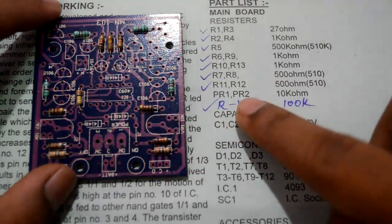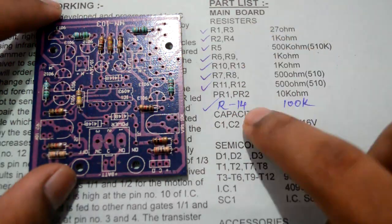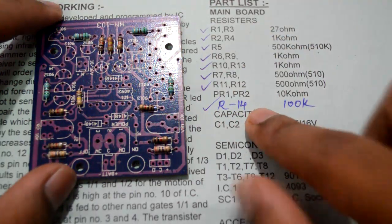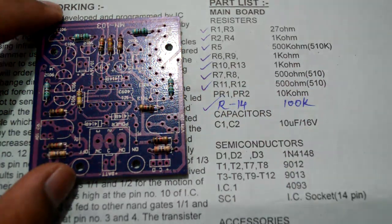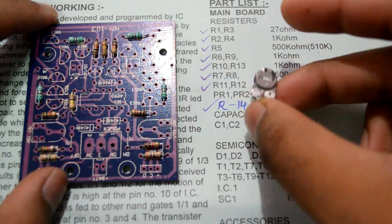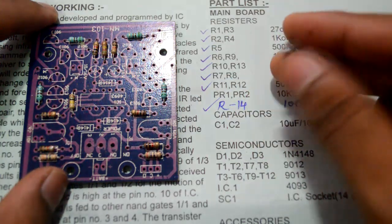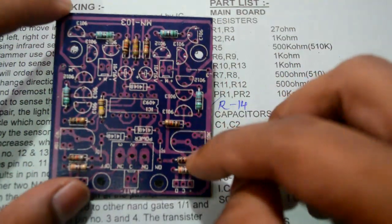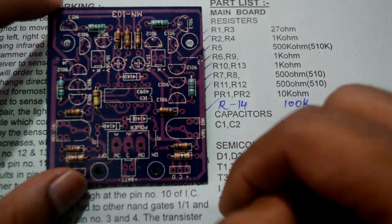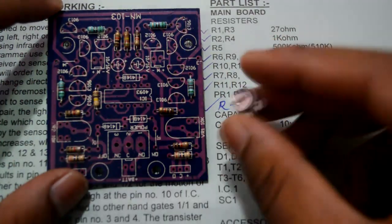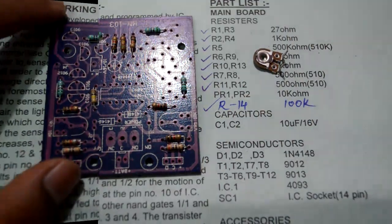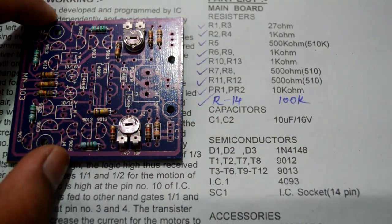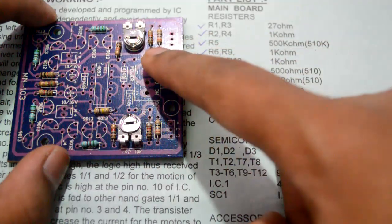We have completed with all the 14 resistors. The next thing we'll be doing is soldering the presets - preset one, preset two, which is of 10 kilo ohm which looks something like this. This is basically a kind of potentiometer, so there are two of them which go here and here. Let's just go ahead and solder these.